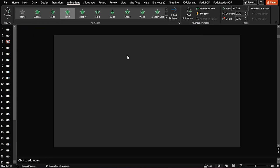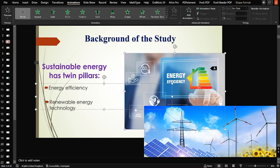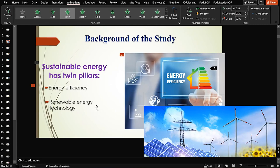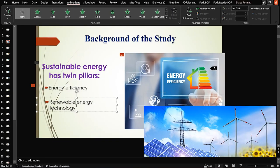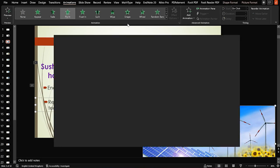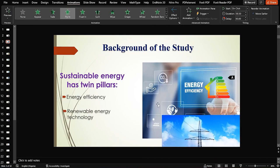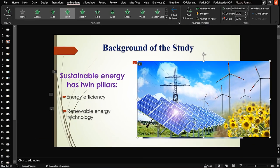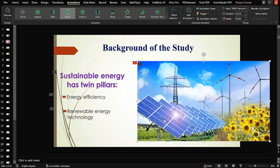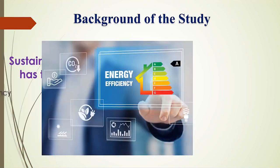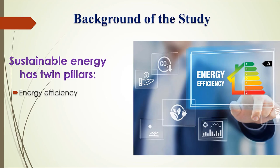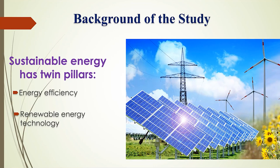We can have 'Energy Efficiency' coming in with this image — they come together. Let's change the direction to come from the left. We can have 'Renewable Energy Technology' by selecting this image and this text and flying them in from another different angle. Make sure it overlaps and closes the previous image as it comes in. In the slideshow, we talk about sustainable energy's twin pillars: the first is energy efficiency, represented by this image, and the second is renewable energy technology, represented by this image.